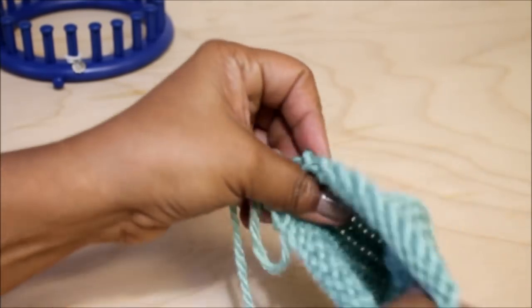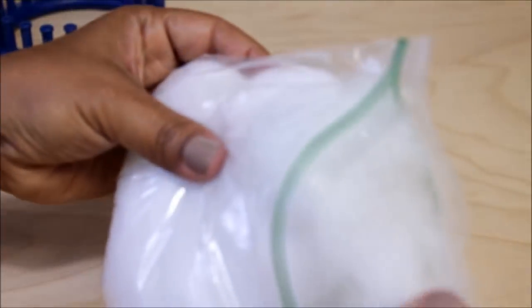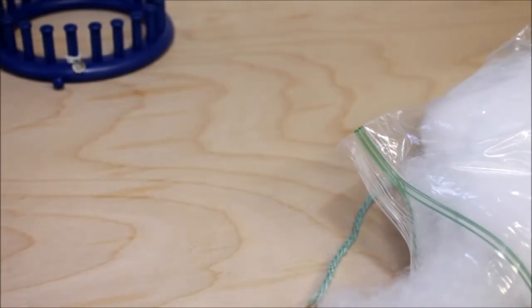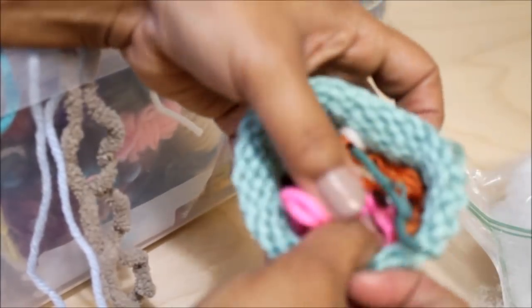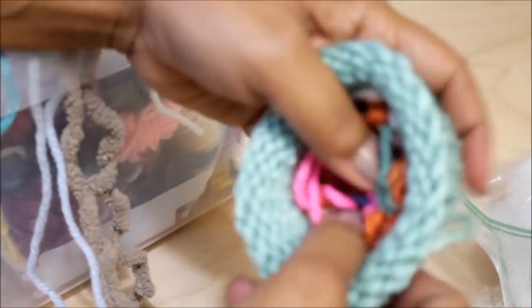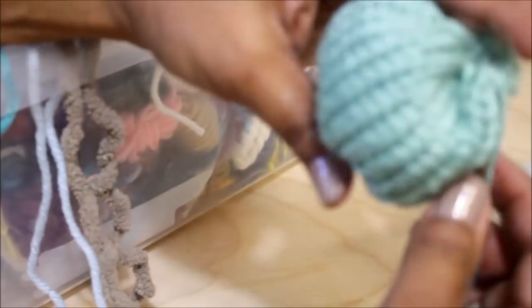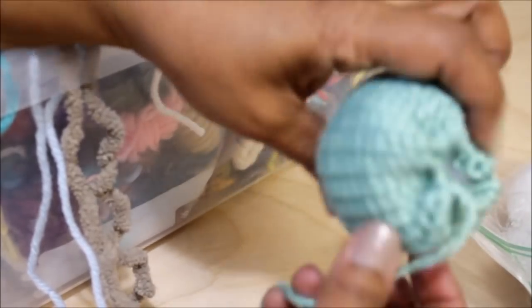Then it's time to stuff it. I'm gonna give you several options. You can use the regular polyfill or in my case I like to use leftover scrap yarn because then I can wash my pom-pom. You could fill it till the brim or just use your regular polyfill and keep stuffing your project until it has the shape that you want.